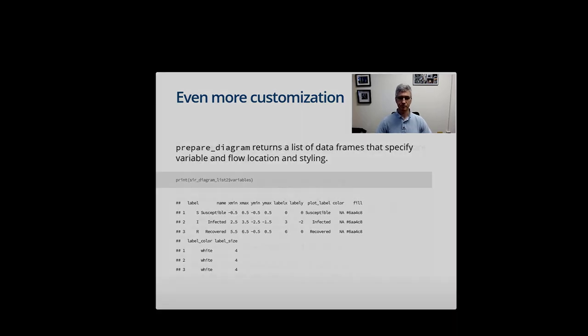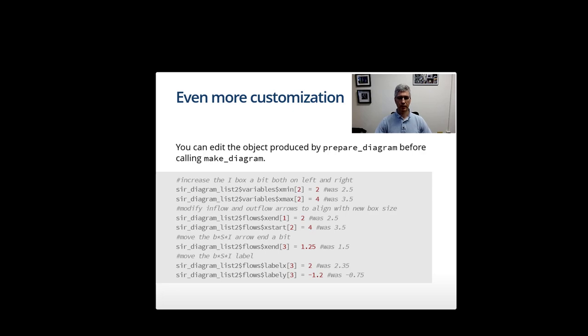In this example here I'm going to make the I box a bit bigger, then I adjust the inflows and outflows so they're still at the edges of the box, and also move the beta times S times I flow around a bit. You'll just supply different numbers for those.